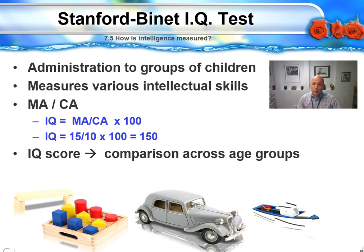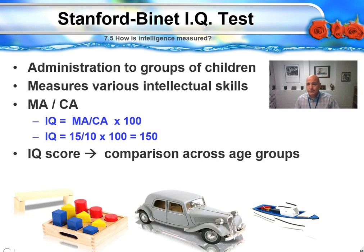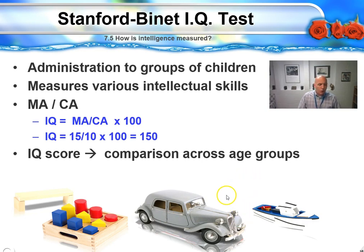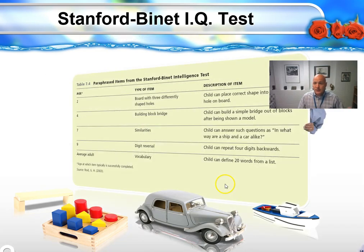So an IQ of 150 would be significantly intelligent. If, on the other hand, you had a ten-year-old who was very delayed — not getting ten-year-old items correct, not even getting nine, eight, seven, or six-year-old items correct — let's say he tops out at a mental age of five. Ten divided by five is 0.5; 0.5 times a hundred is 50. An IQ of 50 would be significantly below average and significantly delayed. And so, the IQ test was born — the intelligence quotient as a formula for quantifying giftedness or delay.